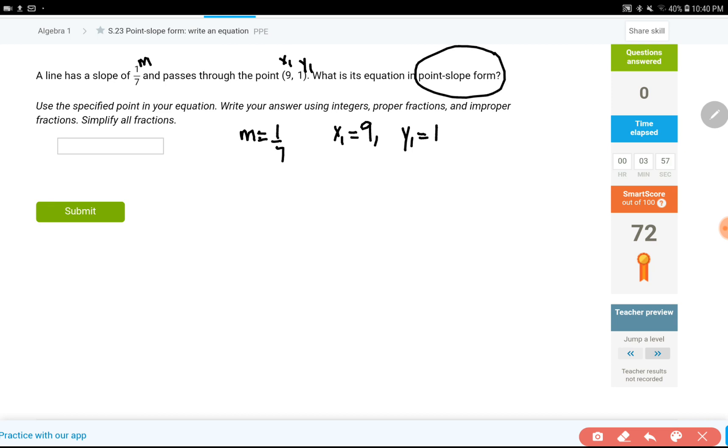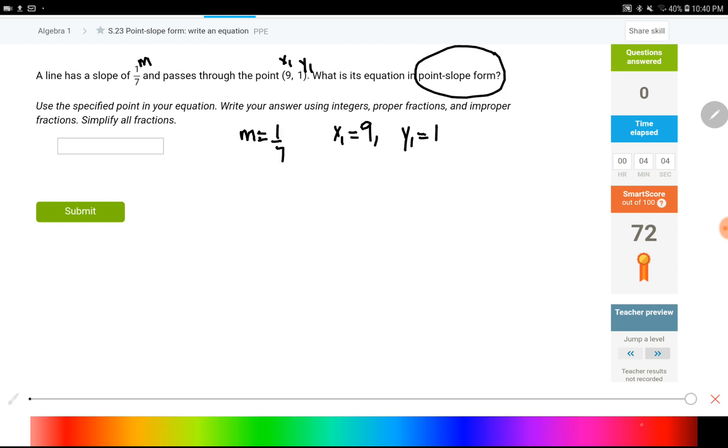So we are not going to write this as a slope intercept, that's a positive. So, let's just remember what a point slope form would look like. Y minus y1 equals m times x minus x1.